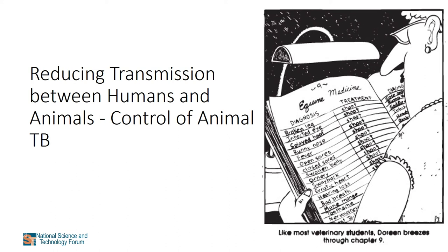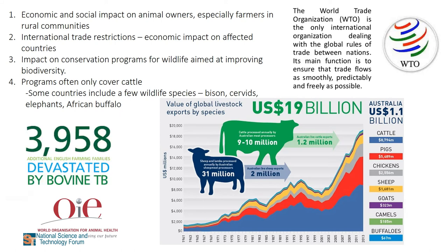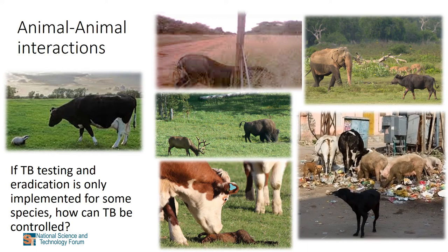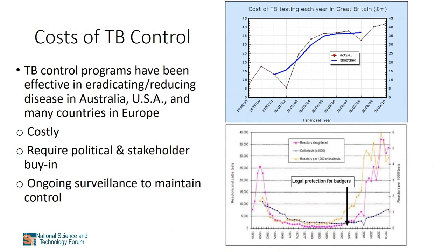Currently in South Africa, control programs aimed at reducing transmission between humans and animals are based on eradication of infected animals. Unfortunately, this has a negative economic and social impact on animal owners, especially farmers in rural communities. It leads to international trade restrictions and negatively impacts conservation programs for wildlife. These programs often only cover cattle and a few wildlife species, so if TB testing and eradication is only implemented for some species, effective control remains elusive. TB control programs in the USA, Australia, and many European countries have been effective, but were very costly, required political and stakeholder buy-in, and ongoing surveillance.